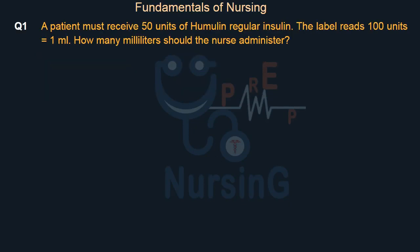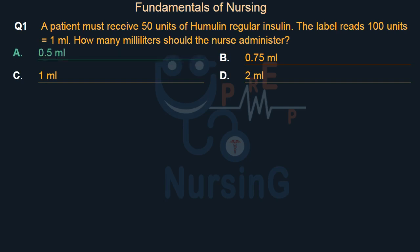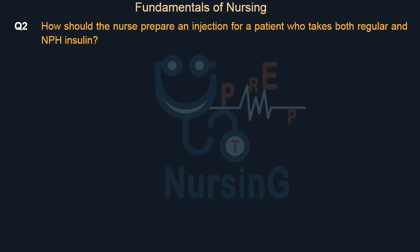A patient must receive 50 units of Humulin Regular insulin. The label reads 100 units equals 1 milliliter. How many milliliters should the nurse administer? Option A: 0.5 mL. Option B: 0.75 mL. Option C: 1 mL. Option D: 2 mL. The right answer is Option A: half a milliliter.